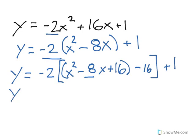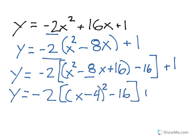So now I'm going to make my perfect square. So that's x minus 4, all squared, minus 16. We're still in the brackets, plus 1.